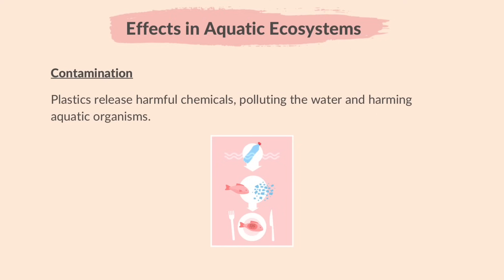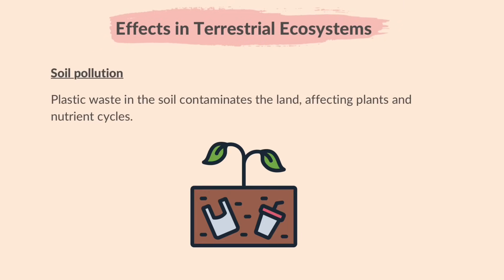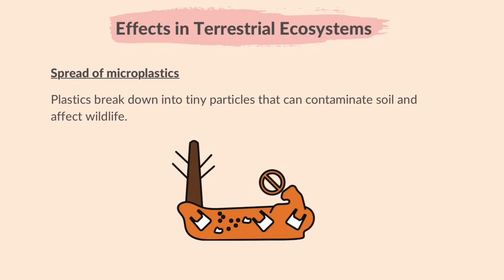As plastics break into tiny pieces, they release harmful toxins that hurt sea creatures, and these pieces also get into the food that animals eat. In terrestrial ecosystems: Soil pollution — plastic waste in the soil contaminates the land, affecting plants and nutrient cycles. Wildlife impacts — animals can be harmed by encountering plastic waste in their habitats. Spread of microplastics — plastics break down into tiny particles that can contaminate soil and affect wildlife. It is crucial to reduce plastic waste and practice proper disposal and recycling to minimize these impacts.